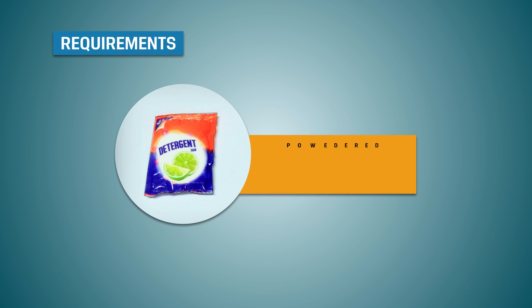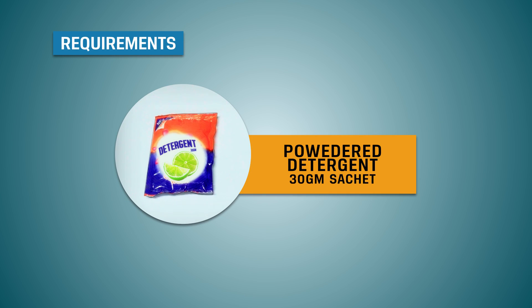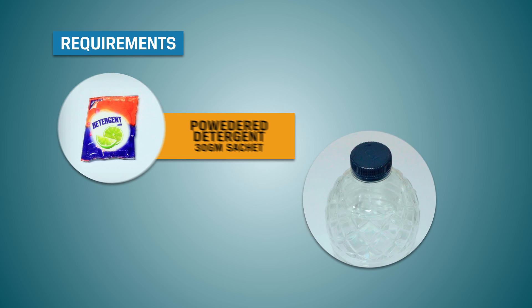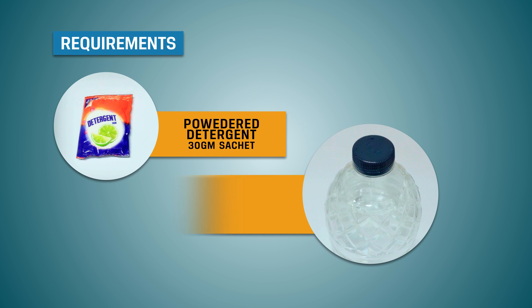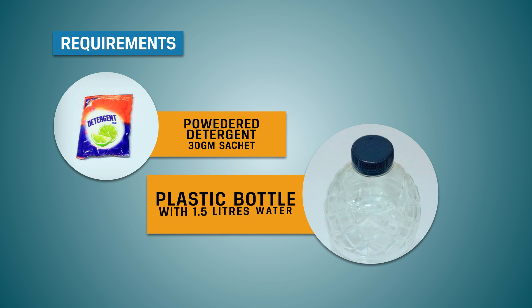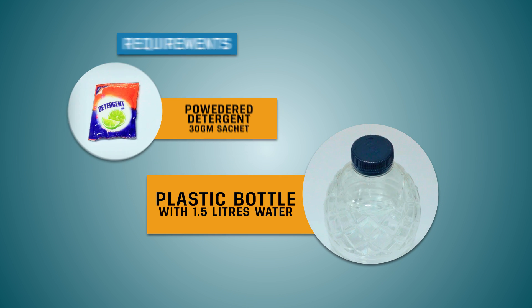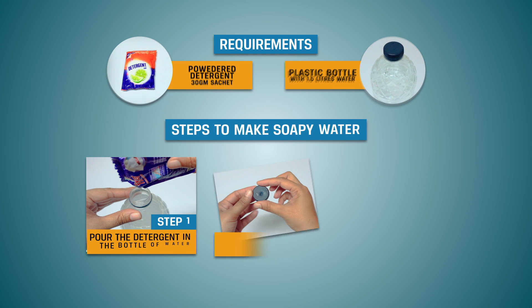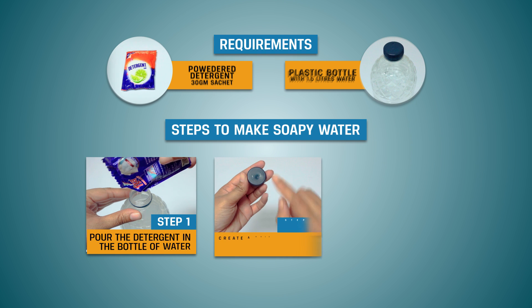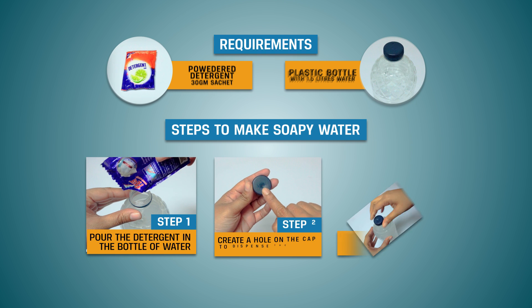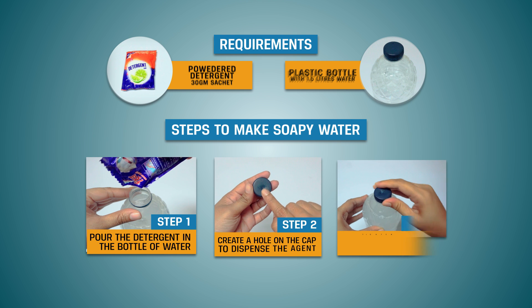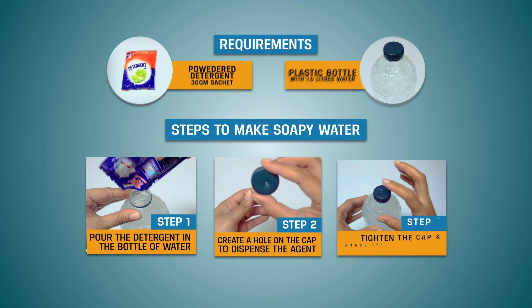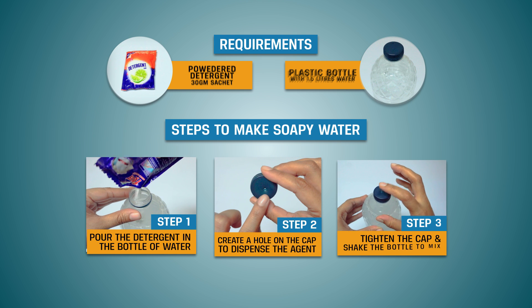Let's see the recipe of soapy water. Step 1: Pour the detergent into the bottle. Step 2: Create a hole into the bottle cap. Step 3: Tighten the cap and shake to mix.